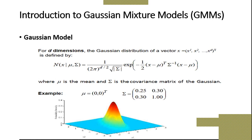Here mu is the mean and sigma is the covariance matrix of the Gaussian. For example, you can see that this is a value of mu and this is the value of sigma. On the basis of that, we can get this type of graph. Using this graph, you can easily find out the centroid and differentiate or cluster the data points into three types.